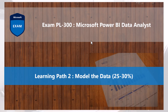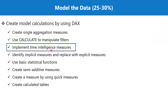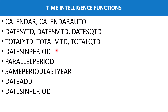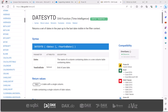Welcome back to the PL-300 exam preparation series where we are exploring the second learning path: Model the Data. In this video we will continue to explore the topic 'Implement Time Intelligence Measures'. The next set of time intelligence functions are very similar: DATESYTD, DATESMTD, and DATESQTD. There is also a similar set: TOTALYTD, TOTALMTD, and TOTALQTD. We are going to explore these functions in this video.